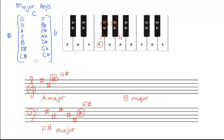To remember which keys are which, there are two major exceptions. The first is C major, which has no sharps or flats — you'll have to memorize that. The second exception is F major, which has one flat. Other than those two, all flat keys will have a flat in the name of the key: B flat major, E flat major, A flat, D flat, etc. If it doesn't have a flat in the name, and it's not F or C, it will be a sharp key.